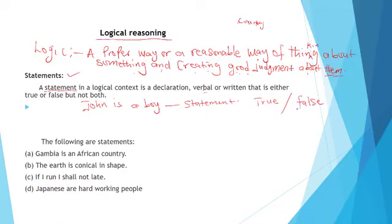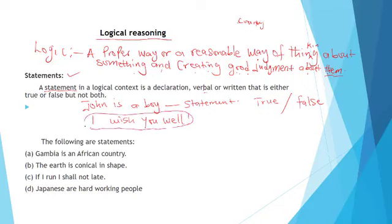However, if I say 'I wish you well,' this is just a wish. You can't say 'I wish you well is true' or 'I wish you well is false.' Since this sentence cannot be verified as true or false, it is not a statement. A statement is a sentence whose validity can be verified as either being true or false.